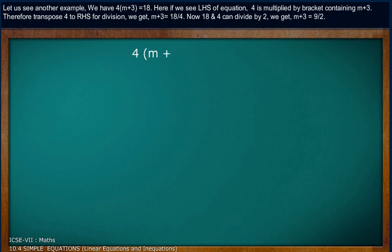Let us see another example. We have 4 times (m plus 3) equals 18. Here, if we see the left-hand side of the equation, 4 is multiplied by the bracket containing m plus 3.